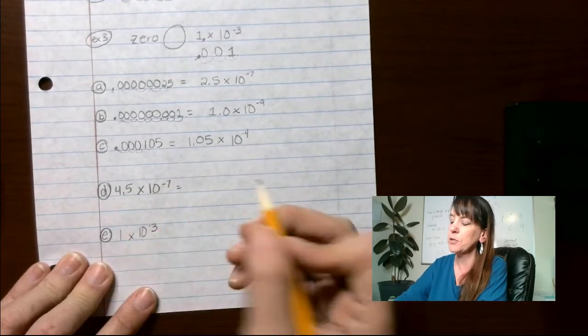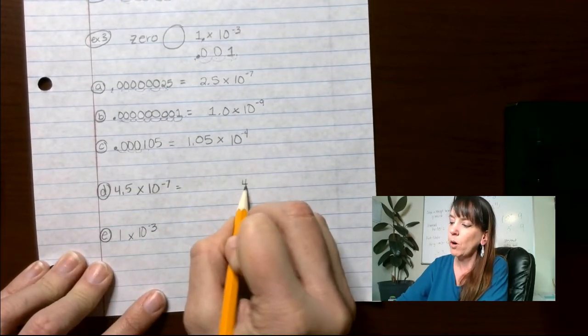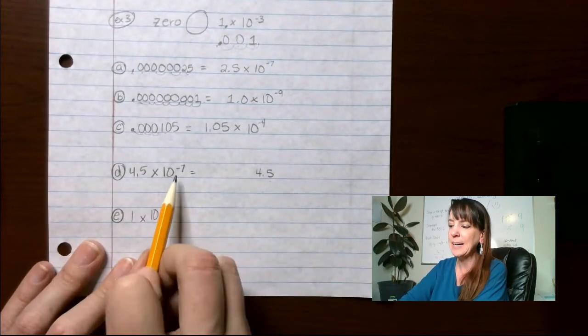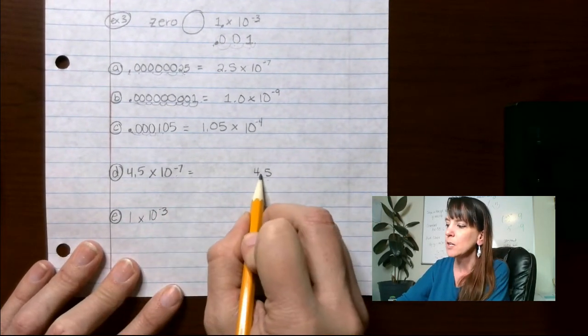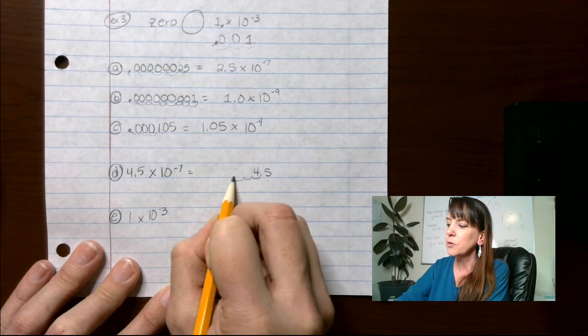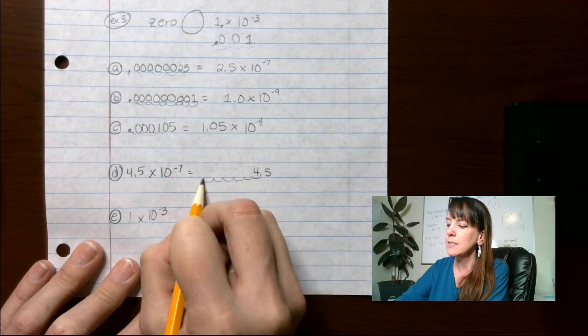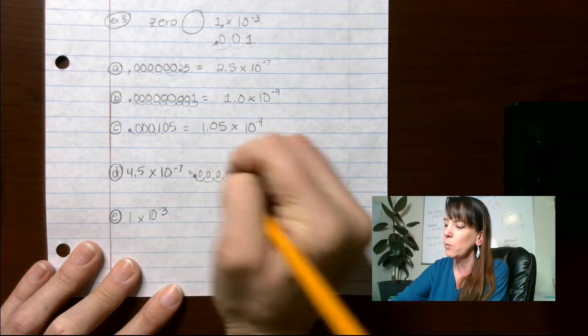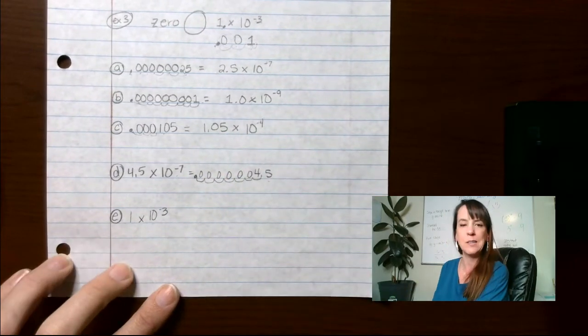All right. Now we're going to go in reverse. What we want to do is 4.5. Notice I'm writing it all the way over here. When you're doing your homework, you might find that to be helpful because we have to go 7 spots over. So we're going to go 1, 2, 3, 4, 5, 6, 7. We're going to put a decimal and we're going to do 1, 2, 3, 4, 5, 6 zeros in there.